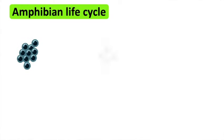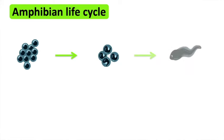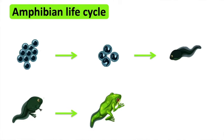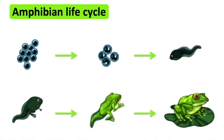For the amphibian life cycle: first, eggs are laid in the water. The amphibian begins to develop in the eggs, hatches, and continues to grow in the water until adulthood. For example, a frog. An adult frog lays hundreds of tiny eggs in the water. A tadpole begins to form in the egg, and after a few weeks the tadpole hatches.